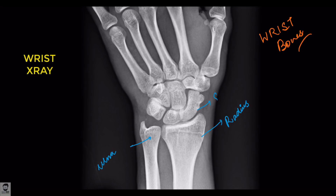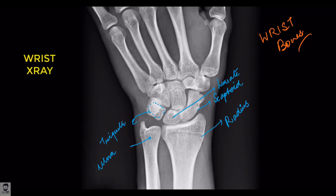Then the proximal row of the carpal bones — the outermost and most lateral — starts with the scaphoid bone. Have a look at our mnemonic videos to learn these bones pretty easily. After the scaphoid is the lunate bone. So we're going from outside to inside, lateral to medial. The next bone is the triquetral.